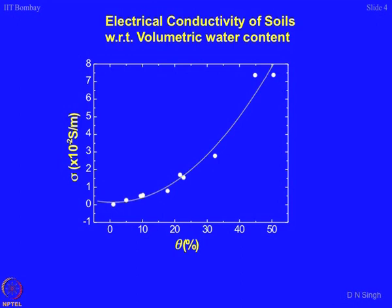Using sigma DC: when it is plotted with respect to volumetric moisture content — or for that matter even the total or bulk conductivity of the soil — what you will notice is a non-linear increasing pattern. What this indicates is that as moisture content increases, conductivity of the material increases. When you add more and more moisture into a system the ionic conductivity increases. Ionic conductivity will always be more for a soil in a slurry form compared to a semi-solid or solid state. This curve basically shows how conductivity varies with respect to volumetric moisture content.